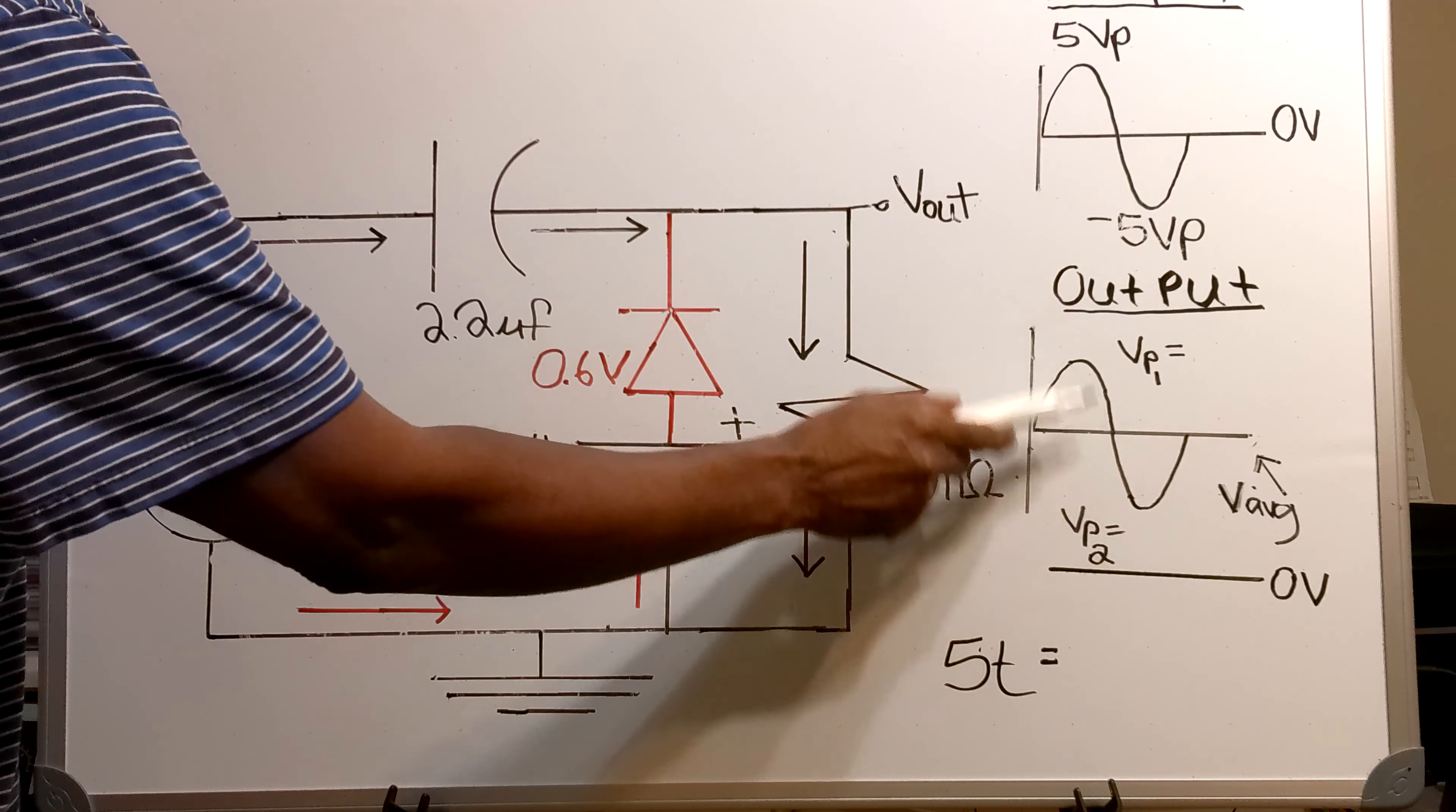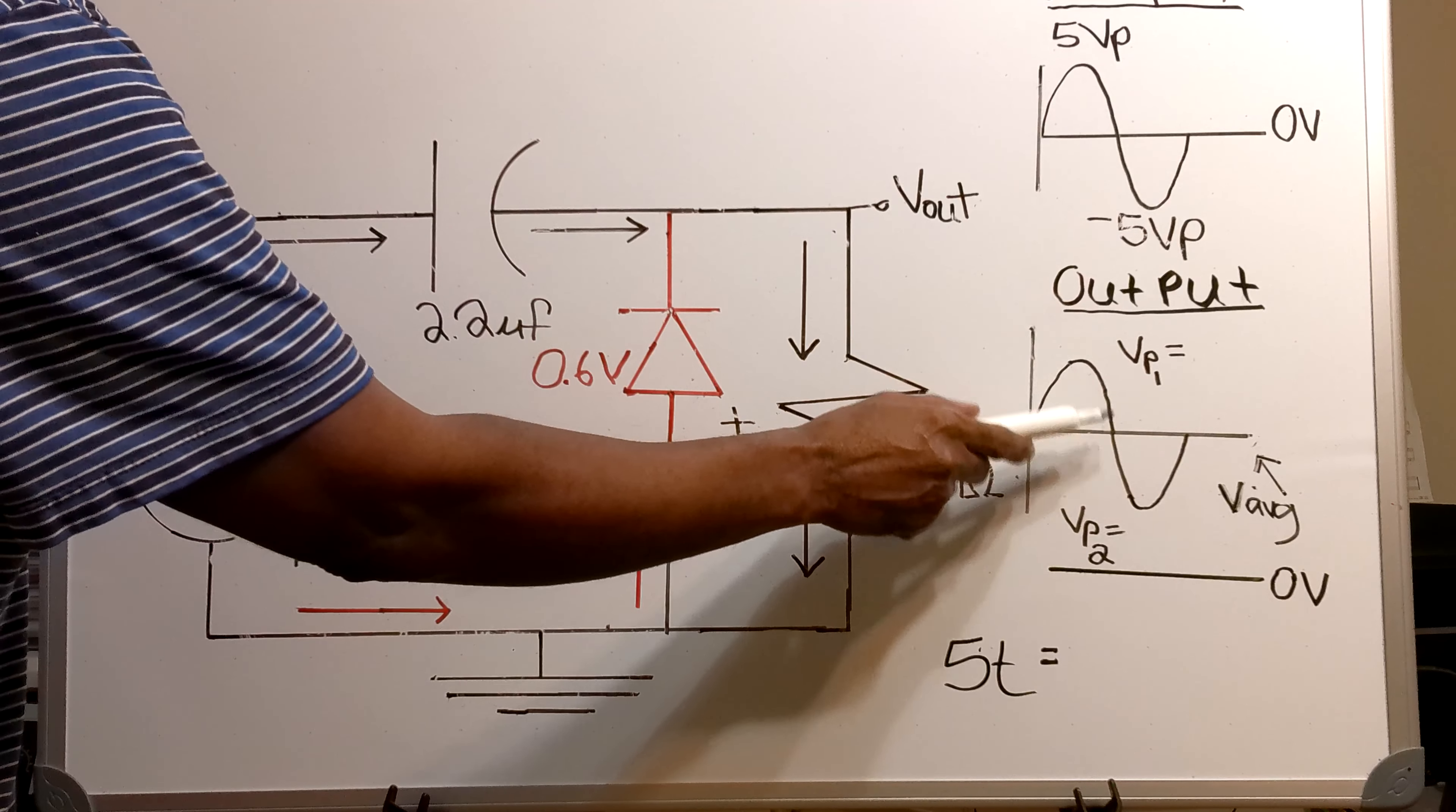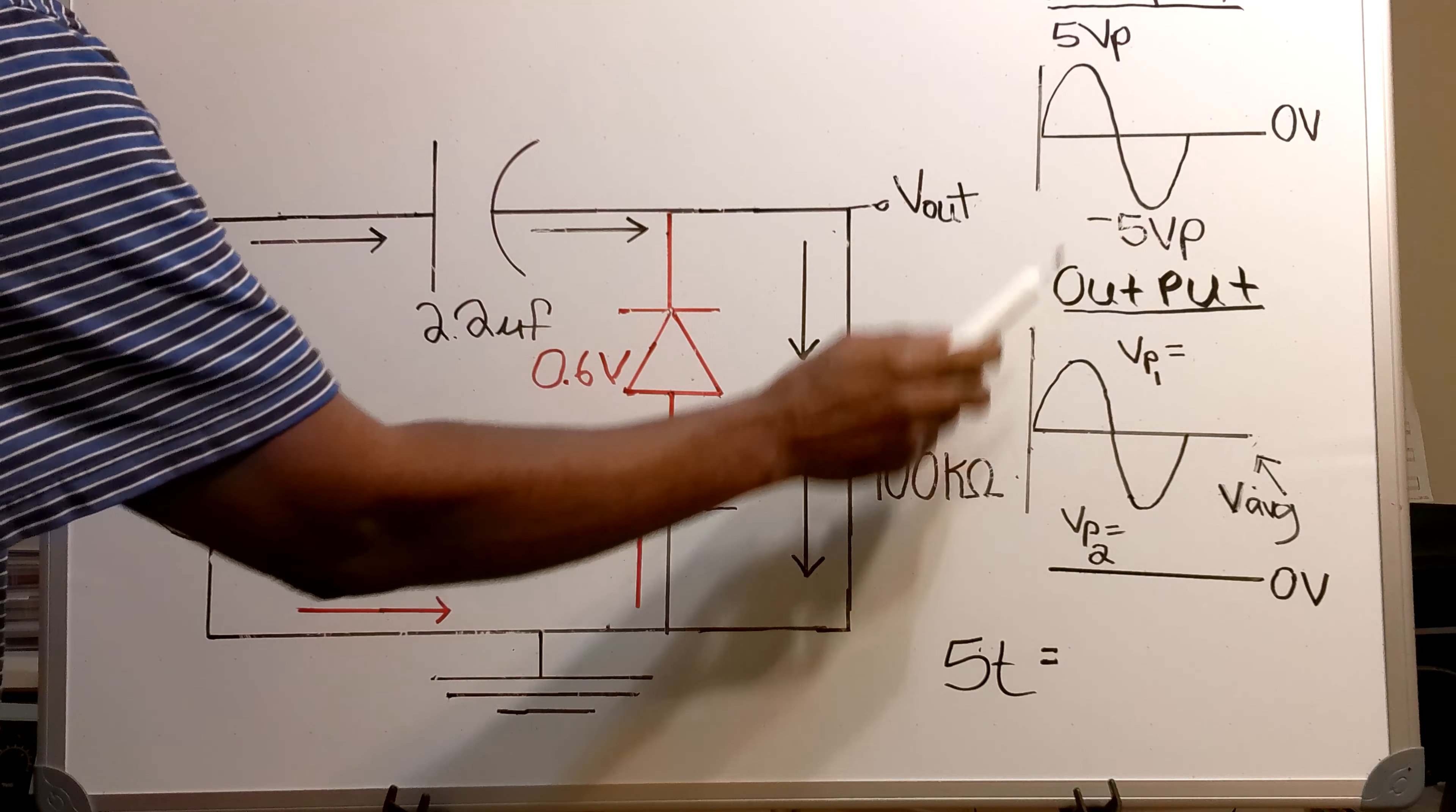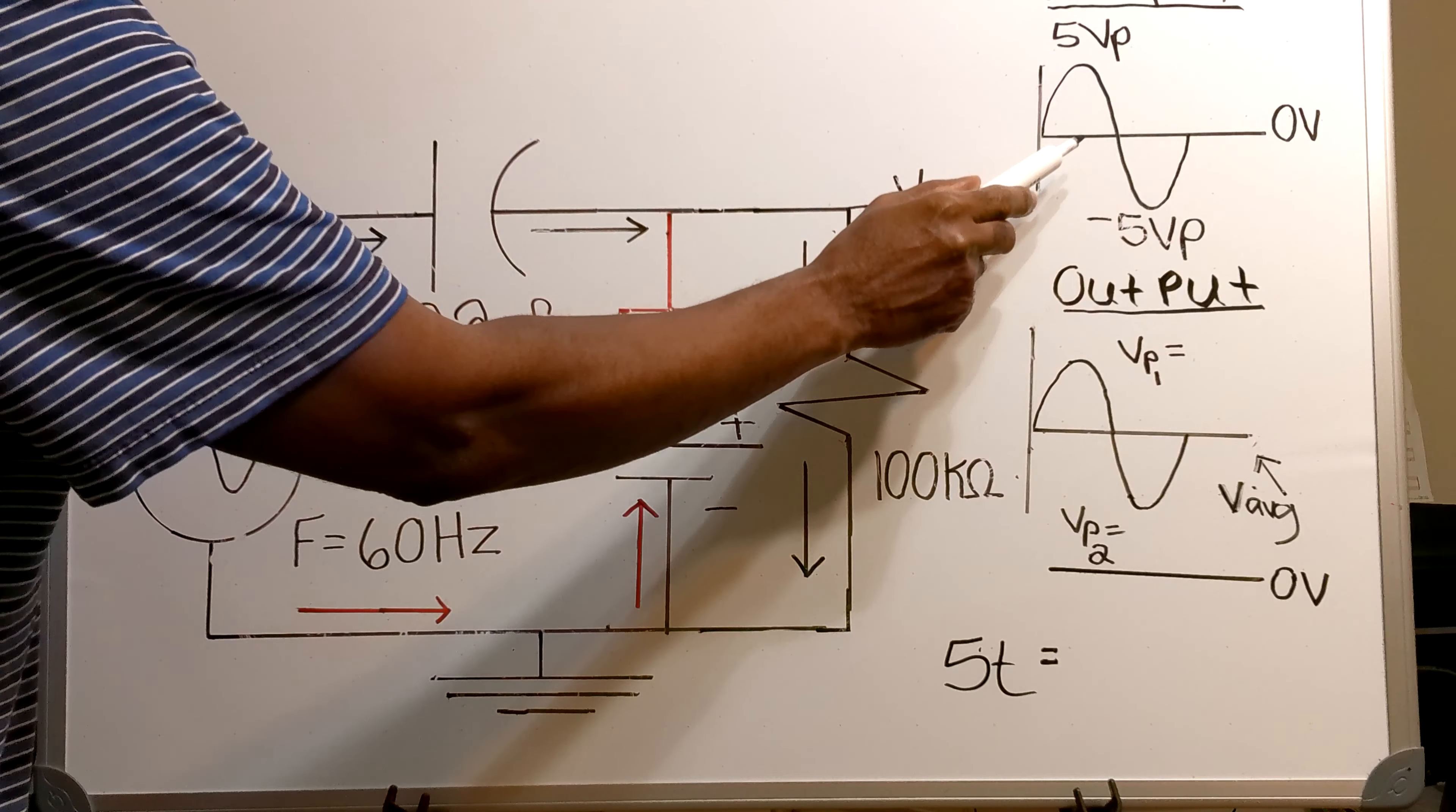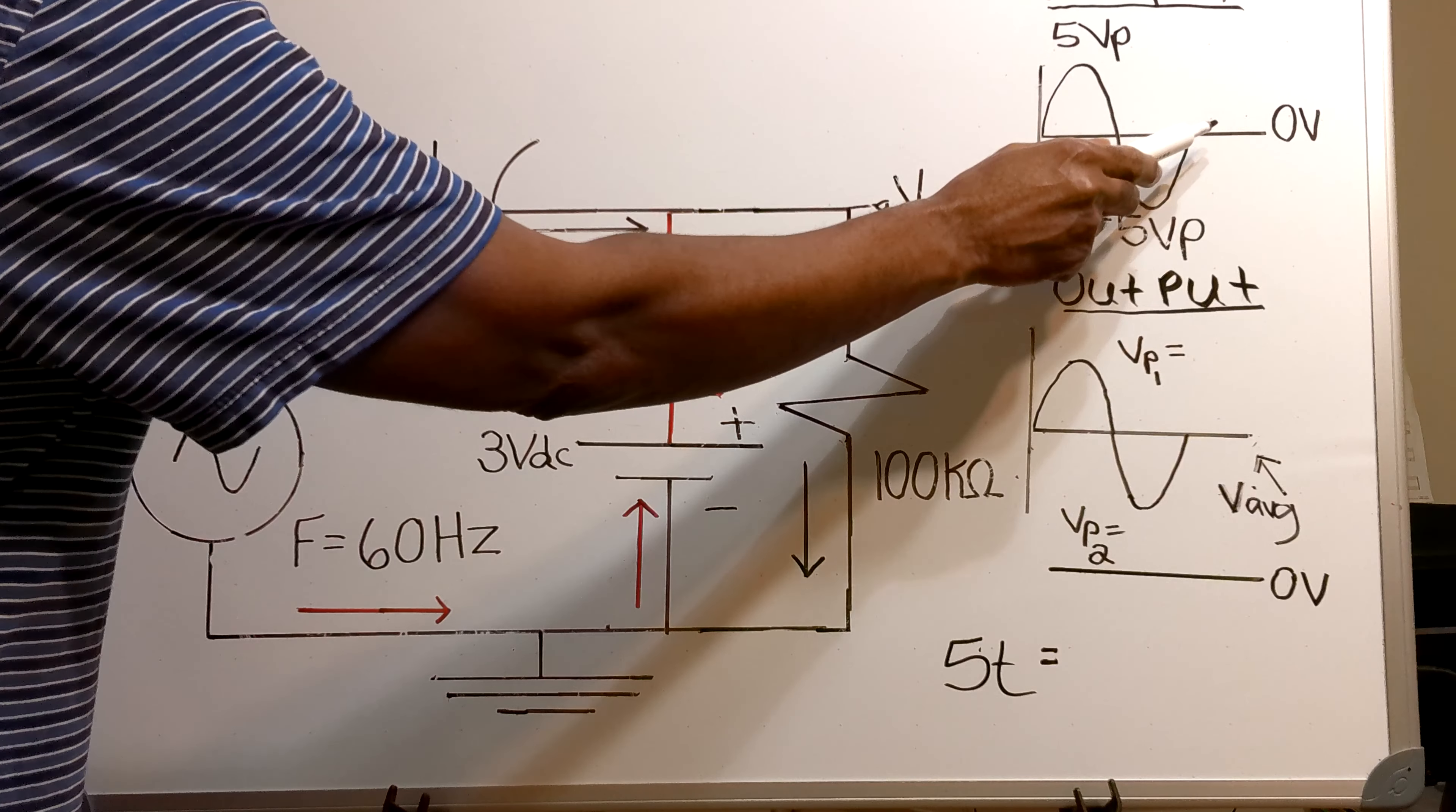The input voltage will be a 10 volt peak to peak signal, 5 volts at the top and negative 5 volts at the bottom, and this will be the output voltage.